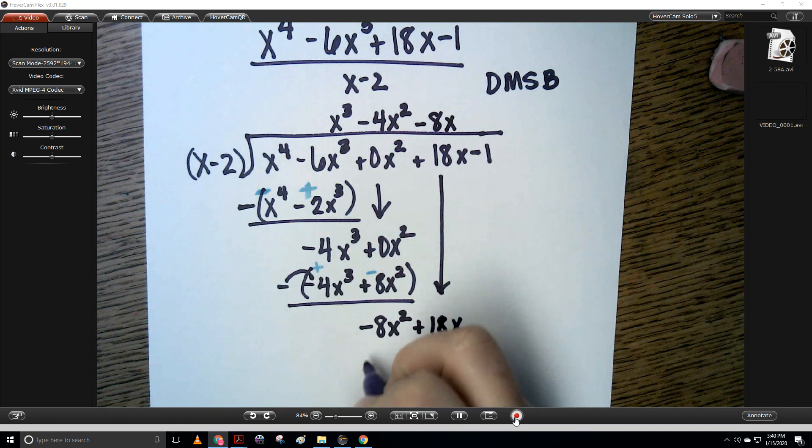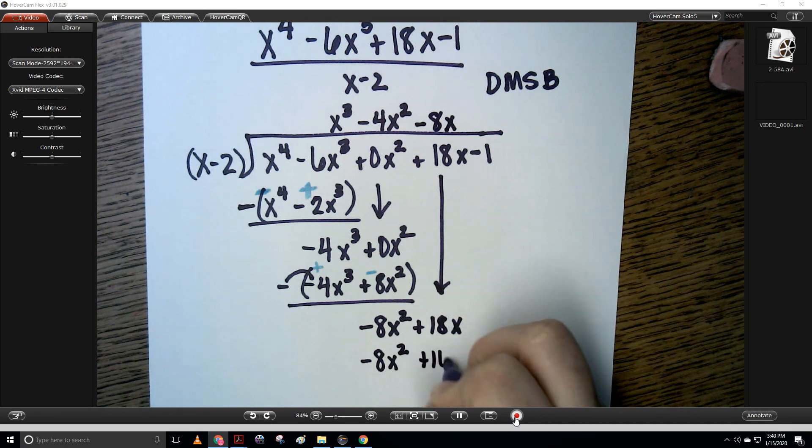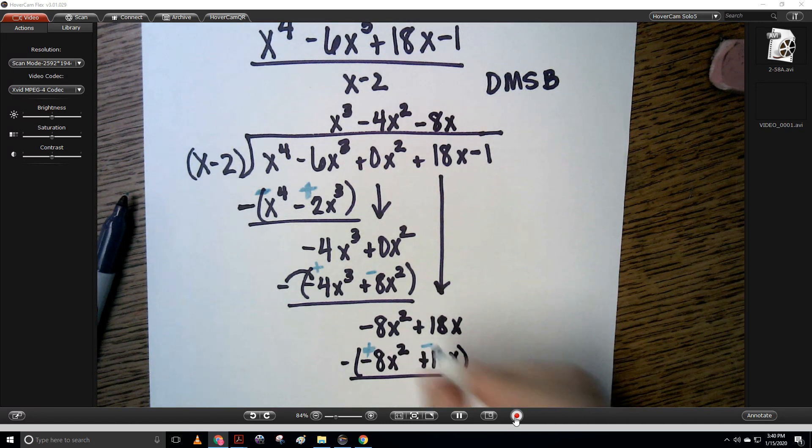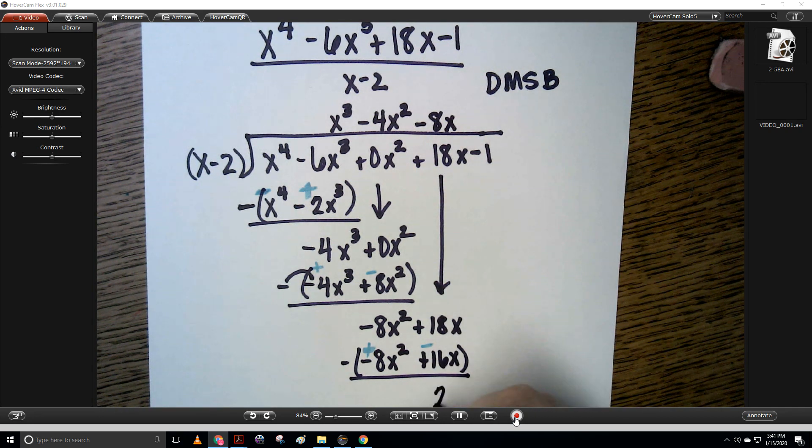Now I'm going to multiply. I get negative 8x squared and positive 16x. Subtract. Distribute that negative. This becomes a positive and this becomes a negative. So 18x minus 16x is 2x.